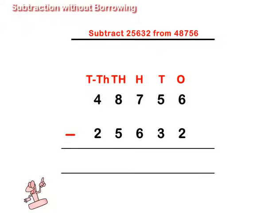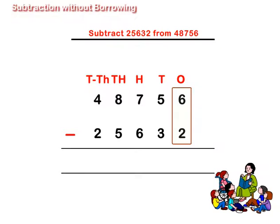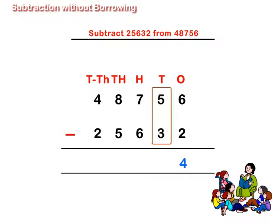Then, subtracting numbers at ones, we get 6 minus 2 is equal to 4. Subtracting at tens place, we get 5 minus 3 is equal to 2.